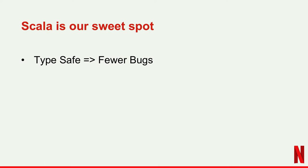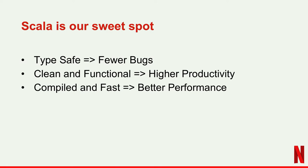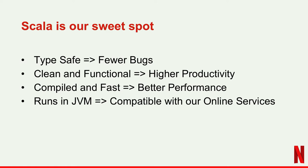Scala is our sweet spot because it matches a lot of the criteria we look for. It's type-safe, which means a developer is bound to introduce fewer bugs. It's clean, functional, with immutable data structures, allowing for higher productivity. Unlike some interpretive languages, it's compiled into bytecodes and it's fast, which leads to better performance. Quite crucially for us, it runs in a JVM, which means it's compatible with our online services — most of which are Java-based.